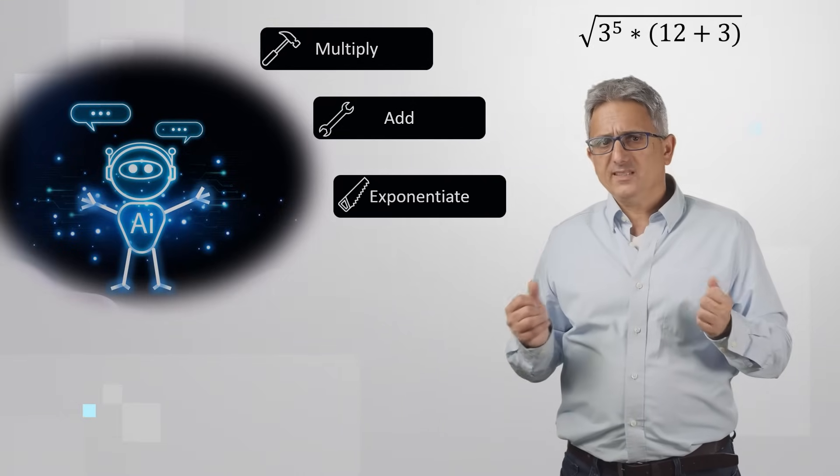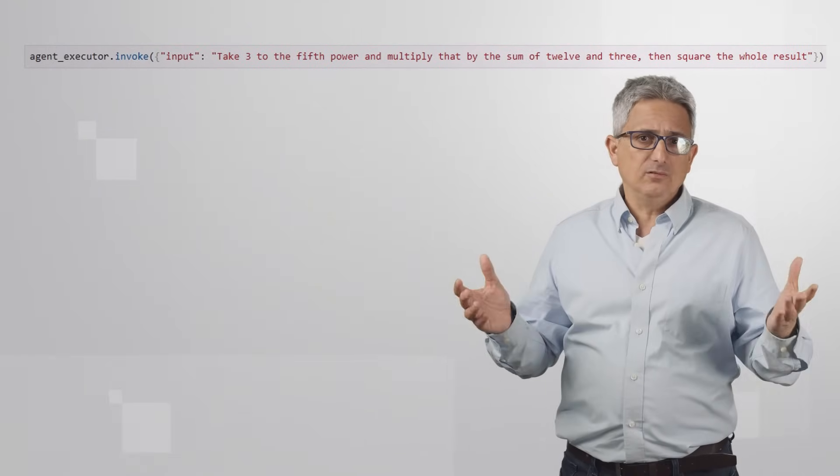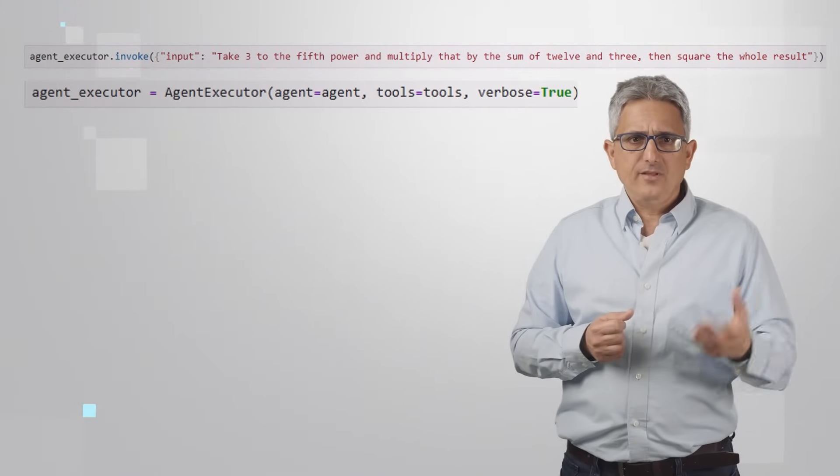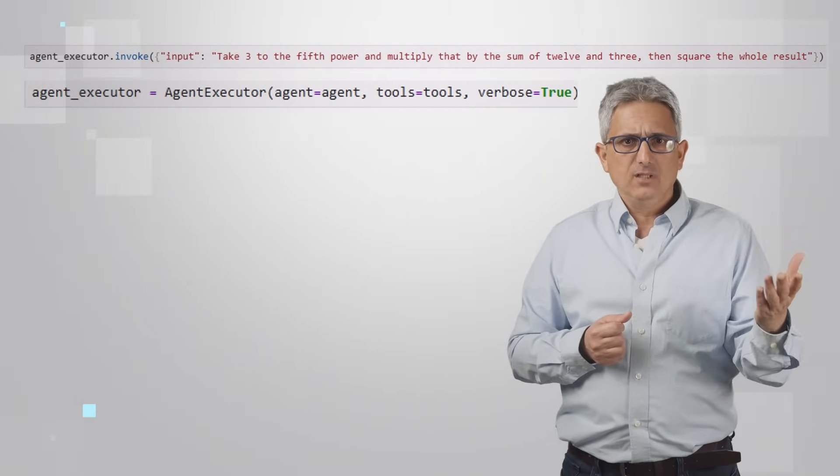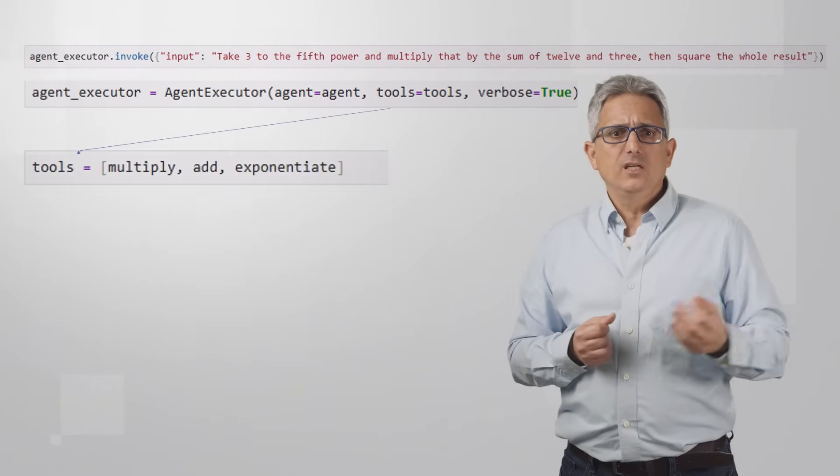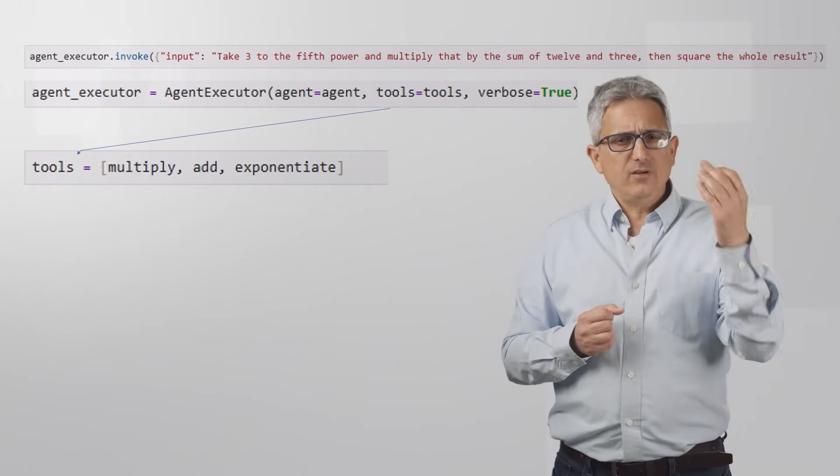The code is fairly simple. So, we are basically executing an agent and hand it a prompt with the task. This agent executor is using the agent and a set of tools. Here is the definition of our tools.